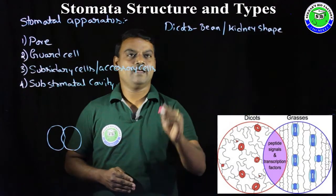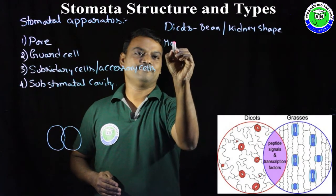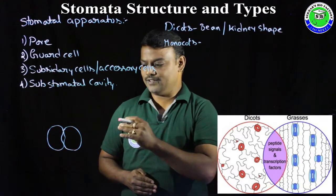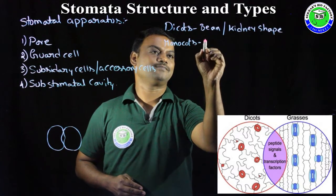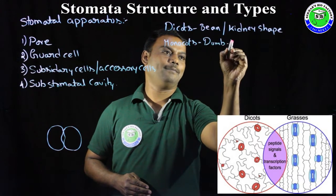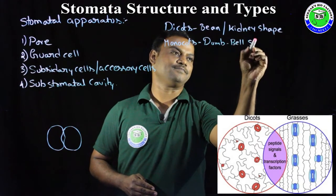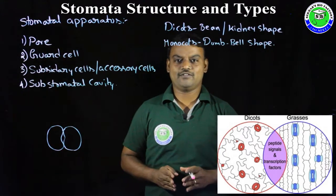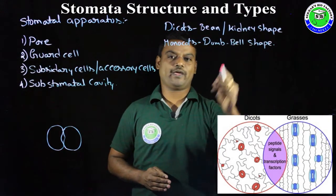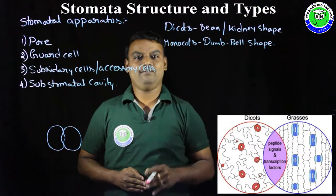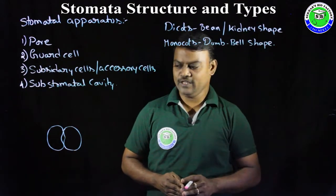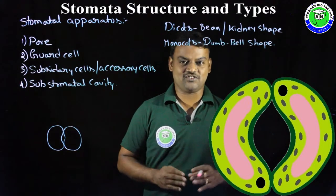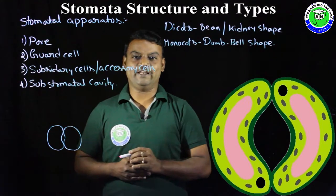In monocotyledonous plants the shape of the guard cell is dumbbell shape. So dicotyledons have guard cells with bean or kidney shape, while monocots have guard cells with dumbbell shape.